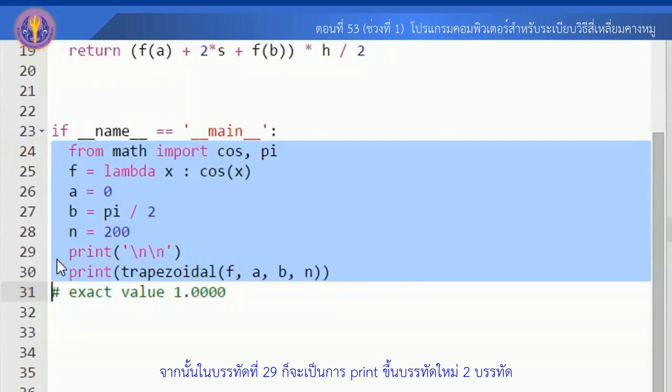บรรทัด 29 จะเป็น print ซึ่งจะเป็นฟังก์ชัน trapezoidal กับฟังก์ชัน f และค่า a, b และ n และเราจะพิมพ์ค่าของ integral ด้วย